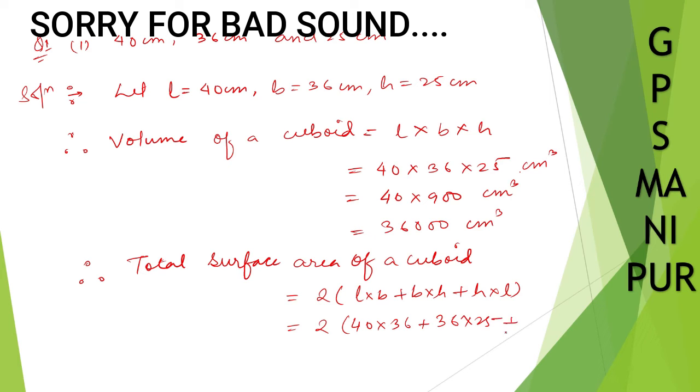plus height times length, so height is 25 and length is 40 centimeters, so 25 times 40. So 2 times 40 times 36, so 36 times 40 will be 36 times 4: 6, 4, 24, 4, 3, 12, 13, 14, so 1440.